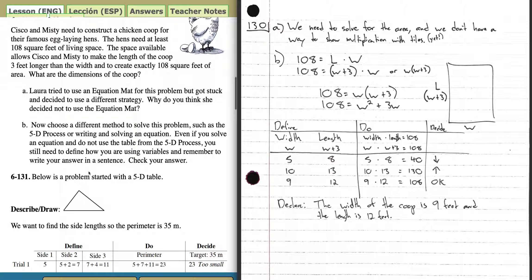So moving on to a new strategy. Choose a different method to solve the problem, such as the 5D process. Even if you solve an equation and don't use the 5D process, you still need to show how you're using variables and write your answer in a sentence. This is actually a perfect example of a time you could use the 5D process, and I used it. I drew a little picture and said the length and the width. I knew that the length was really the width plus 3. So I knew that 108 equals the length times the width, so 108 also equals (W+3) times W.